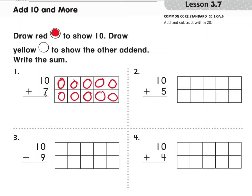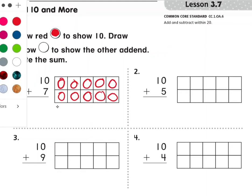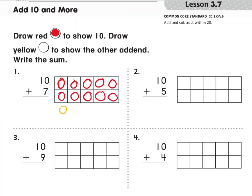And then the other addend, 7, we're going to use yellow: 1, 2, 3, 4, 5, 6, 7. And we do the second addend outside of the 10 frame.